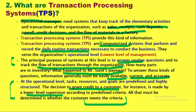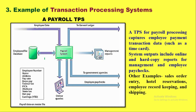If the customer meets the predefined criteria, credit is given; otherwise not. So transaction processing systems work at the operational level and are used by operational-level managers to keep track of all elementary activities and transactions. For example, in a company with 2000 employees at different levels, all of them get salaries and have fixed designations. Salary structures are predefined, so the salary calculation for every employee repeats in the same way — it is a repetitive task handled at the operational level.